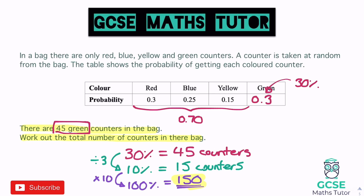This is called a reverse percentage — the question doesn't give us the 100% total, it gives us a part of it, and we have to build back up to 100%. That's a different sort of approach to these table questions.